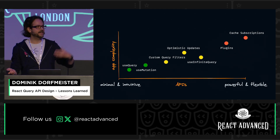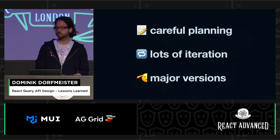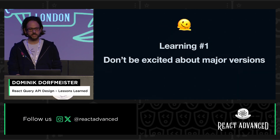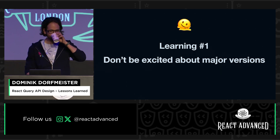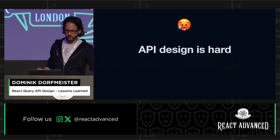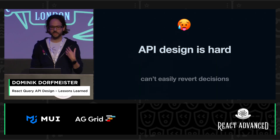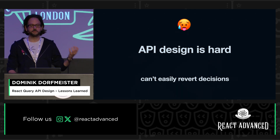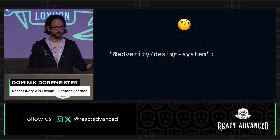We got to this API that kind of evolves with you through careful planning, lots of iteration, and also a couple of major versions. And that gets me right to the first learning that I had as an open source maintainer, which is: I'm no longer excited about major versions. And I think you probably shouldn't be either. API design is especially hard in open source because we can't easily revert the decisions that we've taken. As a different example at work at Verity, we have a design system that we publish to a private NPM registry.